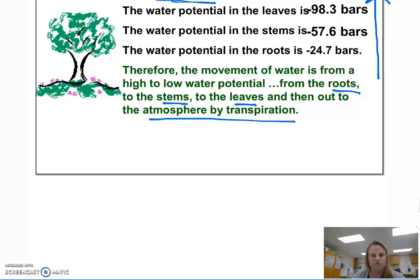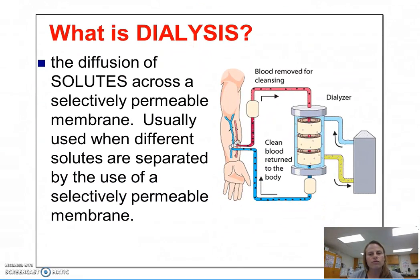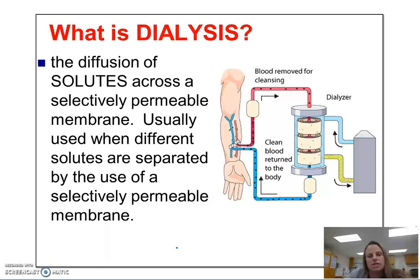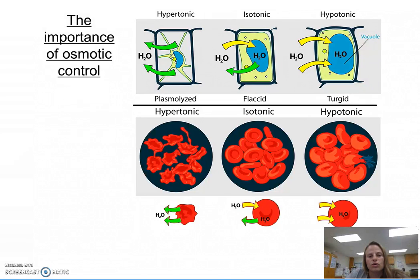Dialysis is another real-life application of osmosis. When a person's kidney isn't functioning correctly, dialysis is used to help filter out the toxins within their blood — the extra solutes that the person doesn't need. The dialysis machine uses osmosis to clean the blood. It sets up a semi-permeable membrane that selects and separates out different solutes, then returns the blood with the solutes the body needs back to the body.